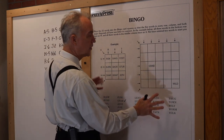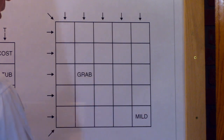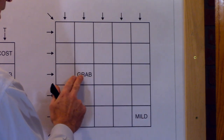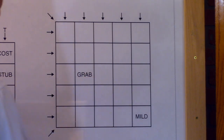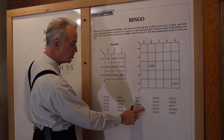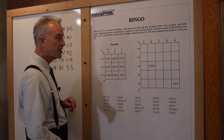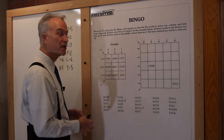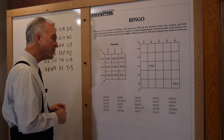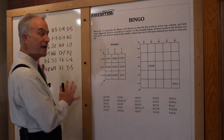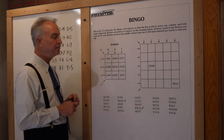The puzzle has also given us a couple of words to help us start off: grab and mild. They've already been checked off on the list. Those are also going to be hints as we move along.